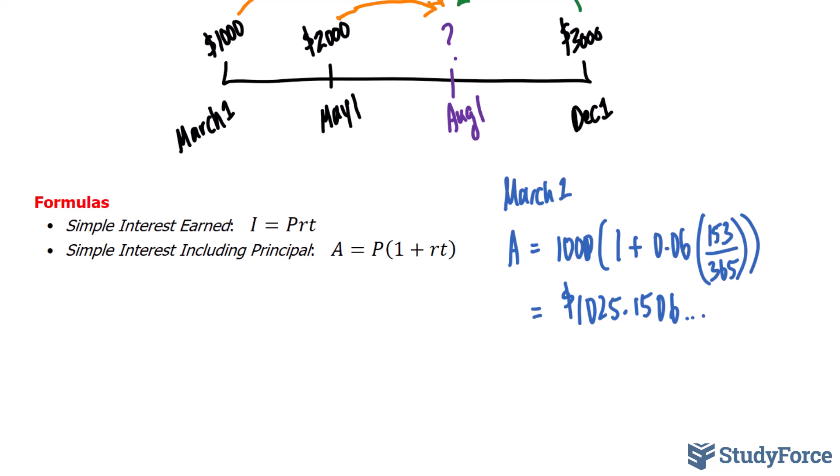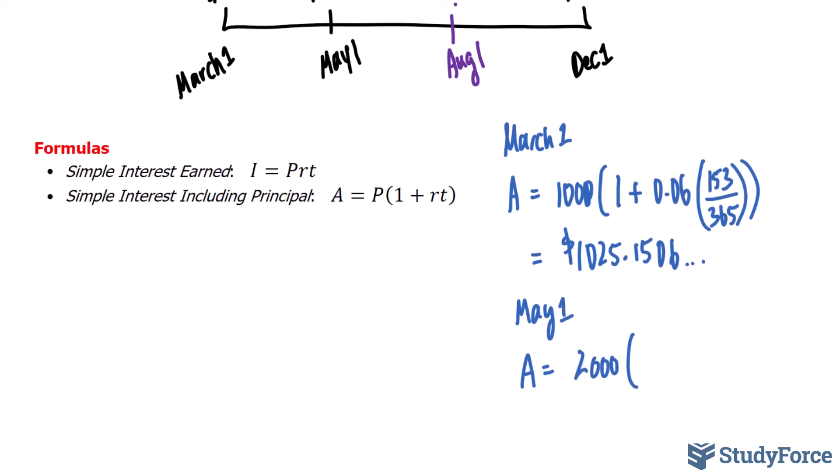Now, let's find the future value of the second payment of $2,000 on August 1st. So, we'll use the same formula again. A is equal to, but this time, 2,000 is the principal. And that's being multiplied to (1 + 0.06).